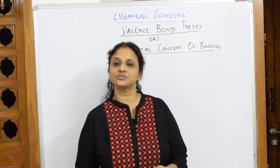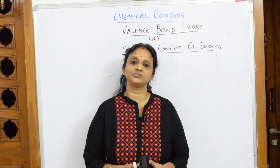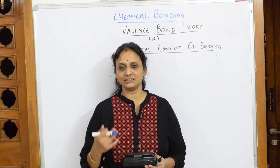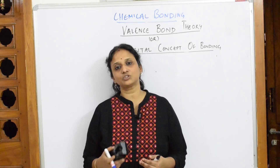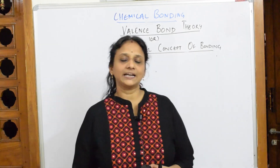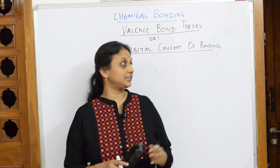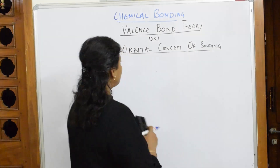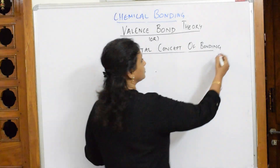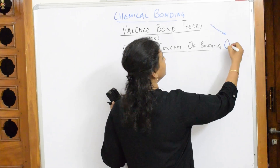We have already gone through the introduction of the chapter on chemical bonding. I'll be starting with the theories now. First, I'll go into detail on all the theories, then come back to the concepts, then we'll be doing types of bonds. I'll be starting with the first type of theory, that is Valence Bond Theory, also called the orbital concept of bonding. In short form, we call this theory VBT.